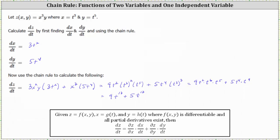Notice how we do have like terms, nine t to the 13th, plus five t to the 13th, is 14 t to the 13th. So dz dt is equal to 14 t to the 13th.